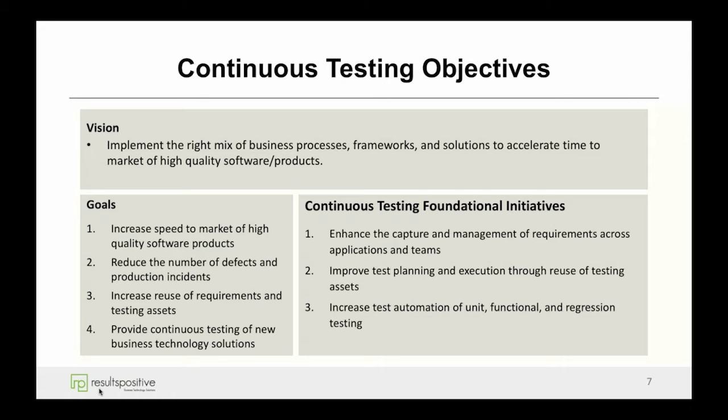We'll also talk about development practices and how that plays into things. Next, there's looking at how to improve overall test planning and execution — it's really about setting up various frameworks and reuse of your various assets. We see many organizations that end up creating basically redundant and repetitive tests, whether it be test plans or test scripts, created in multiple different groups and departments versus having those centrally created and reused, thereby accelerating the overall automation of testing.